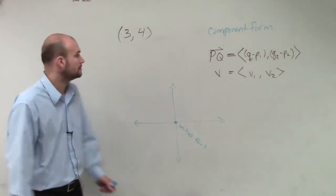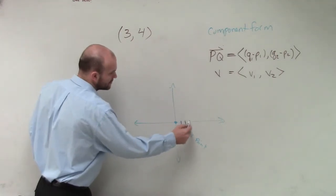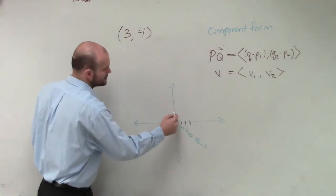A coordinate point, right? With an x value of 3, 1, 2, 3, and a y value of 4, 1, 2, 3, 4.